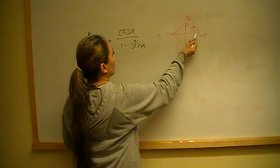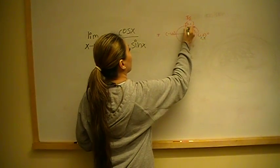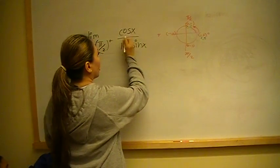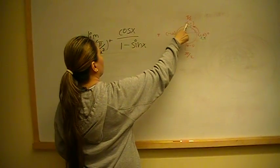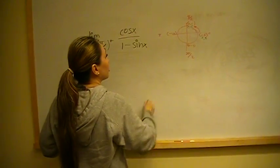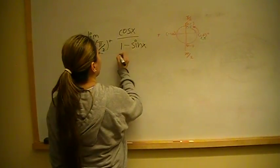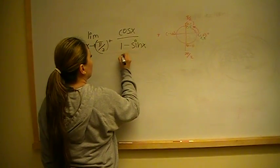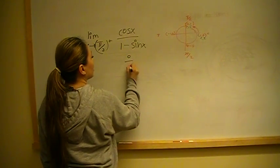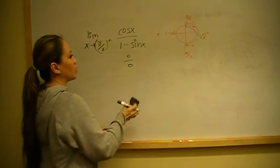As we're coming towards there, we have cosine and sine. Cosine is approaching the value of 0, and sine is approaching the value of 1. So that gives us that this is approaching 0 over 0, and that's an indeterminate form, which means we can use L'Hopital's rule.